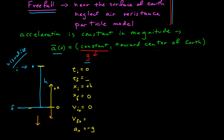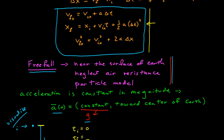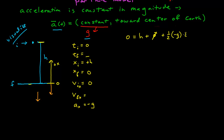I can solve for time using this position expression, where I have the final position, which is 0, equal to the initial position h, plus the initial velocity (which is 0), plus one-half the acceleration (which is negative g), times the final time squared. I solved this before and found the final time is equal to the square root of 2h over g.